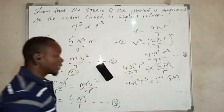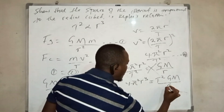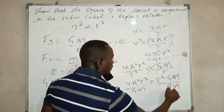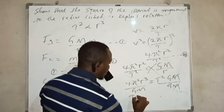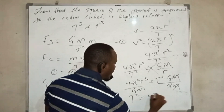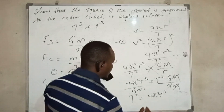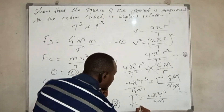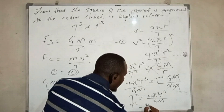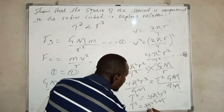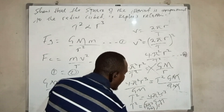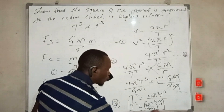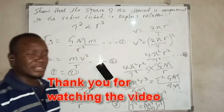Making t² the subject, we divide both sides by GM. This gives t² equals 4π²r³ over GM, which can be written as t² equals (4π² over GM) times r³. We can see that t² is proportional to r to the power of three — and this is the Kepler's relation.